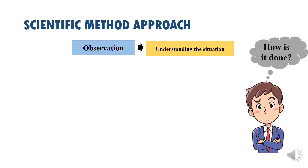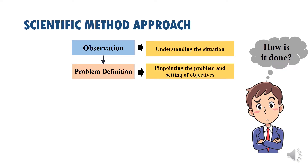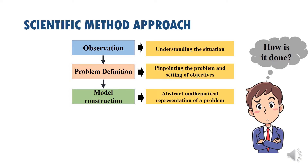After observation, the next step is to define the problem: what is the problem about and what do we want to achieve — setting of objectives. After observing and defining the problem, the next crucial step is to construct a model. In model construction, we create an abstract mathematical representation of the problem, translating it into a mathematical or logical form and identifying all variables involved. You must be very careful in model construction, as you might miss something crucial.